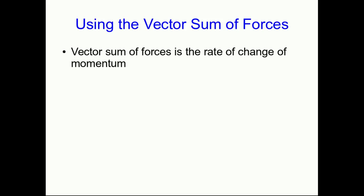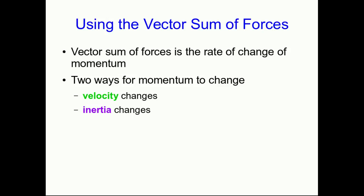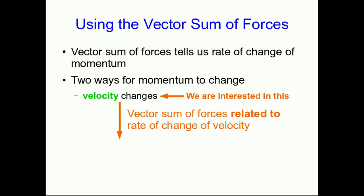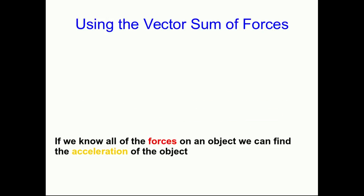The vector sum of forces is the rate of change of momentum, and there are two ways for momentum to change. Either the velocity of something could change, or the inertia of something could change. We're going to focus on velocities of things changing. But we're going to focus on changing velocities, and in that case, the vector sum of forces is directly related to the rate of change of velocity, and we know what that is. That's the acceleration.